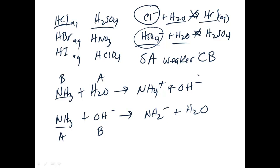The two most common amphiprotic or amphoteric substances you'll deal with in chemistry 180 are ammonia and water. In organic chemistry, you'll likely use the Brønsted-Lowry definition, but there's another theory called the Lewis theory of acids and bases toward the end of the chapter. The Lewis theory is used because organic substances often work in non-aqueous systems — organic substances are often non-polar and don't dissolve in water.